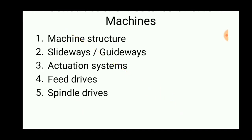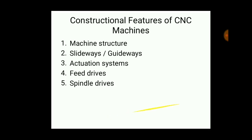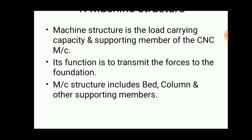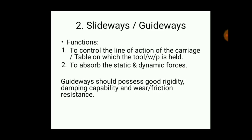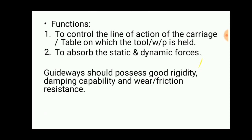Constructional features include machine structure, slideways and guideways, actuation systems, feed drives, and spindle drives, all shown in the diagram. Machine structure is the primary load-carrying structure — for example, the machine tool table — and its function is to transmit forces to the foundation. Examples include the bed, column, and other supporting members. Slideways or guideways control the line of action of the carriage or table holding the tool or workpiece, and absorb static and dynamic forces. Guideways should possess good rigidity to withstand large forces, otherwise the machine may collapse and be damaged.